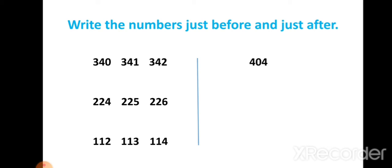Here the given number is 404. We have to write just before number of 404. Which number comes here? That is 403. Now we will write the after number of 404. Which number comes here? That is 405. So 405 is the after number of 404, and 403 is the before number of 404.